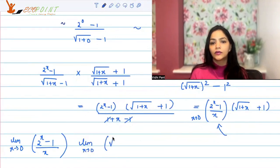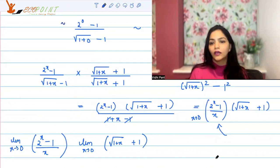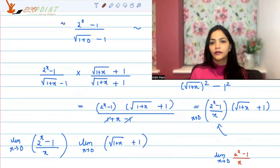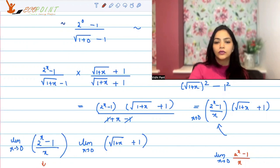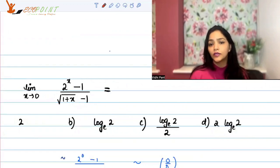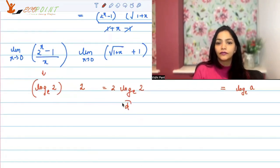So we separate: limit of (2 to the power x minus 1) upon x, multiplied by limit of (square root of 1 plus x plus 1). Now put x tends to 0. The standard result is that limit x tends to 0 of (a to the power x minus 1) upon x equals log a to the base e. So this term gives log base e of 2, and the second term gives 2. Therefore the answer is 2 log e 2. Looking at the options, 2 log 2 corresponds to option D, which is the correct answer.